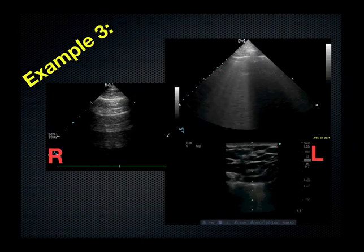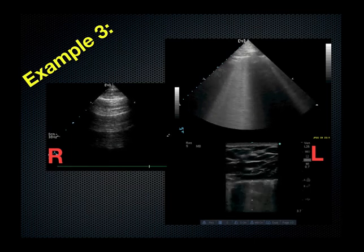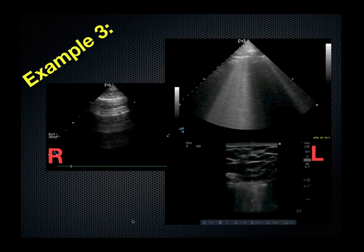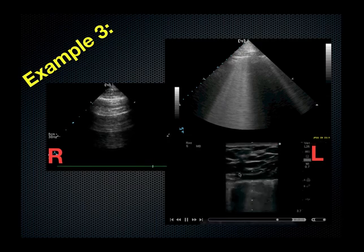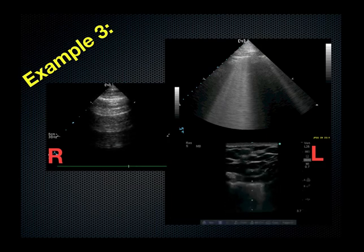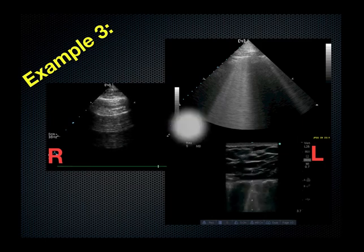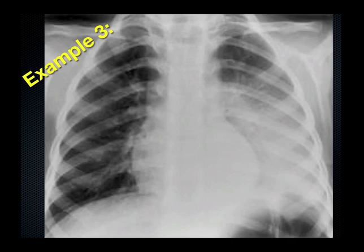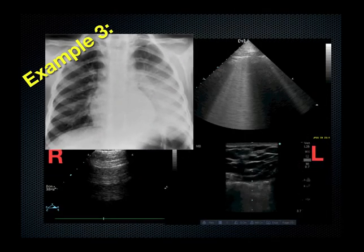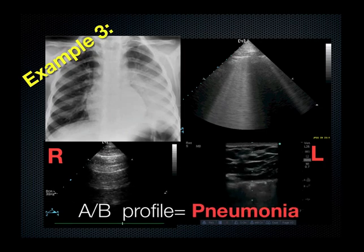Another example: a patient arrives to the emergency room short of breath. Your ultrasound on the right has a predominance of A lines. Your ultrasound on the left has a B line pattern all the way through, and even with a high-frequency probe looking at the pleural line, you can see multiple B lines originating from the pleural line indicating extravascular lung water in the interlobular septi. The chest x-ray might appear unremarkable, and you would be right to call this pneumonia.